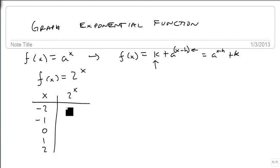So we have 2^(-2), which is 1/4, because the negative turns into a fraction, 2 squared is 4. 2^(-1), which is 1/2. 2^0, which is 1. 2^1, which is 2. And 2^2, which is 4.